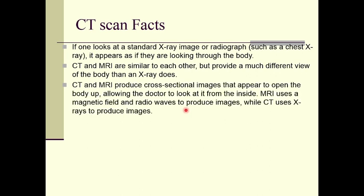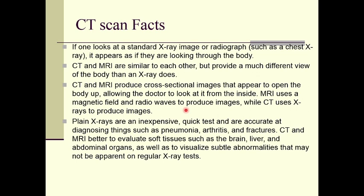CT and MRI are similar to each other but provide a much different view of the body than X-rays. In MRI, a magnetic field is used, whereas CT uses X-rays to produce images. CT and MRI produce cross-sectional images that appear to open the body up, allowing the doctor to look at it from the inside. MRI uses a magnetic field and radio waves to produce images. Plain X-rays are inexpensive and quick, accurate for diagnosing pneumonia, arthritis and fractures. CT and MRI are better for evaluating soft tissues such as the brain, liver and abdominal organs, as well as subtle abnormalities not apparent on regular X-ray tests.